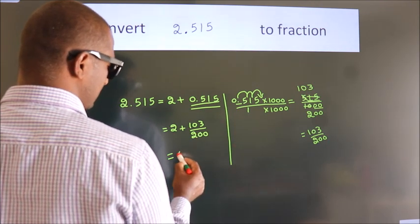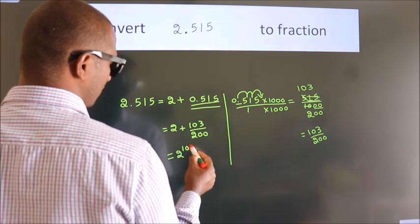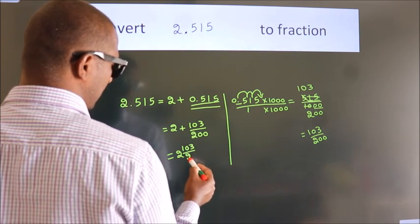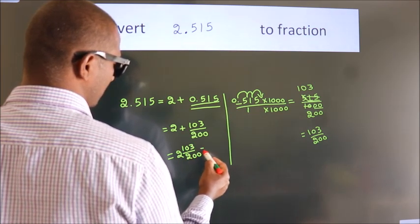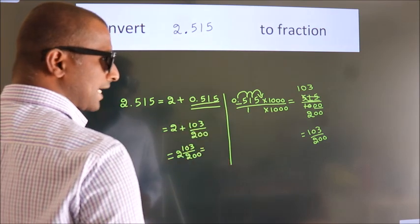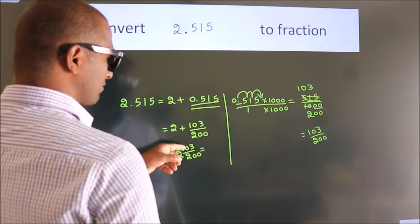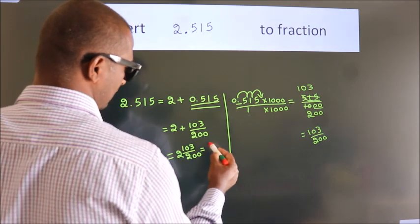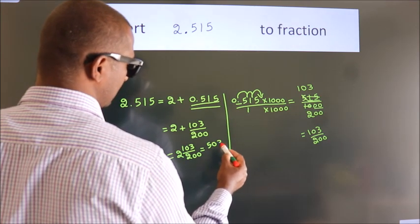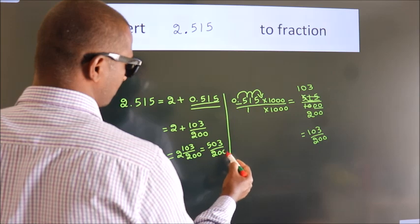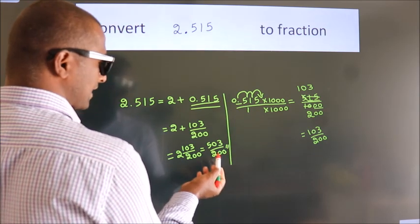In mixed fraction it is 2 103 over 200. And in improper fraction it is 2 into 200, 400 plus 103, 503 by 200 is our fraction.